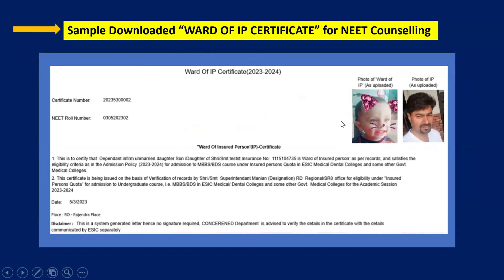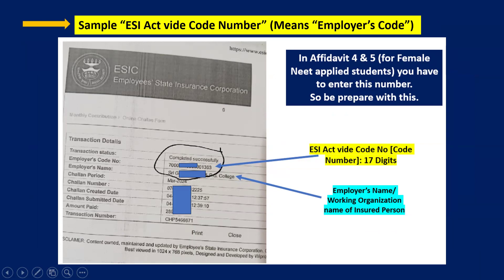This is a sample Ward of IP Certificate. For female students, you have to upload two affidavits. While filling the affidavits, you need to fill the ESI establishment code number — this is the employer's code number. A sample transaction is shown here where you can see the employer's code number and the employer's name. This data you have to fill on the affidavits.